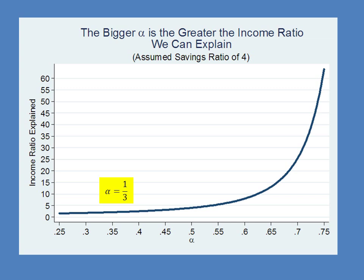Going back to our diagram: if alpha equals one-third, a savings ratio of four can only explain an income ratio of about two. In other words, with alpha = 1/3, the Solow model has real difficulty explaining large income ratios — any reasonably sized savings-rate difference is not enough to explain the income ratios we observe in the real world.